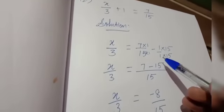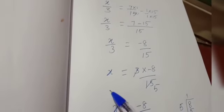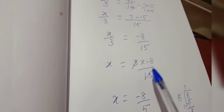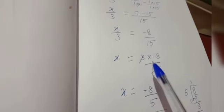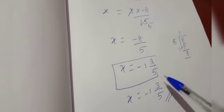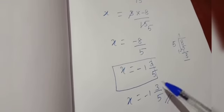One more time I will explain. Here I brought plus 1 to the right side — that becomes minus 1. Then I took LCM. After taking LCM I changed the numerators, then I subtracted. This is the x by 3 value. To find x, I brought divide 3 to the right side, so I wrote it in the right side numerator as a product. Then I simplified because 3 and 15 are multiples of 3, so I cancelled them and got minus 8 by 5. This is improper, so I converted into a mixed fraction and got x equal to minus 1 and 3 by 5.